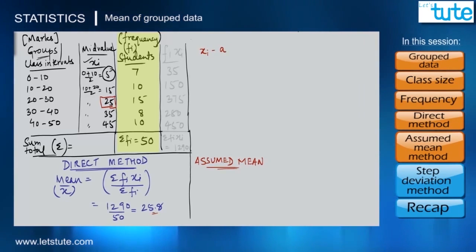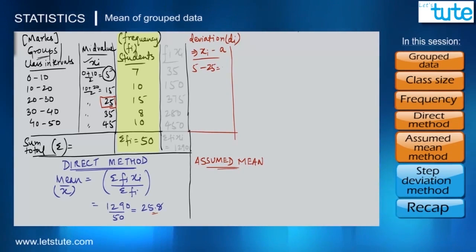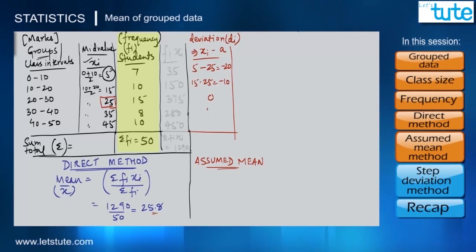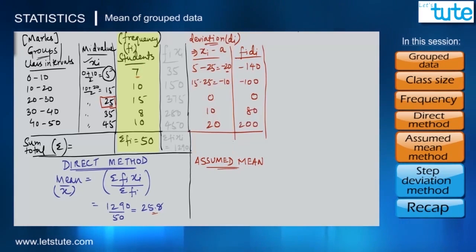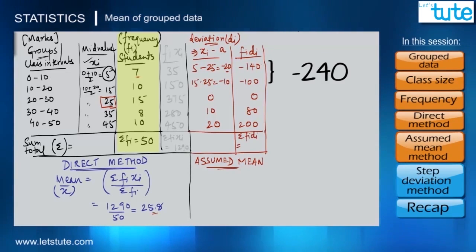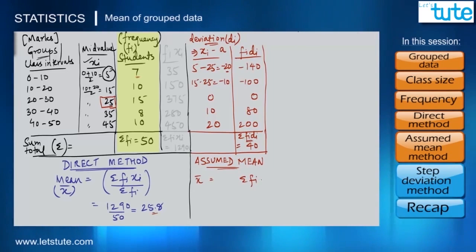In the assumed mean method, from all the mid values we take a middle value called the assumed mean, denoted as 'a'. We subtract it from each mid value to get the deviation di. Subtracting 25 from each mid value: 5 − 25 = −20, 15 − 25 = −10, 25 − 25 = 0, 35 − 25 = 10, and 45 − 25 = 20. Next, we find fi·di: multiplying frequency 7 by −20 gives −140. We calculate fi·di for every class and sum all fi·di values: negative values total −240, positive values total 280, so Σfi·di = 280 − 240 = 40.